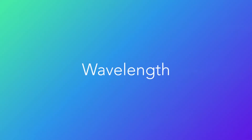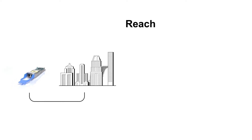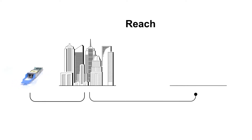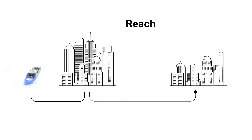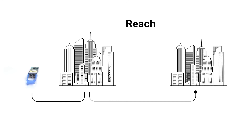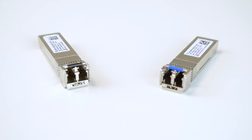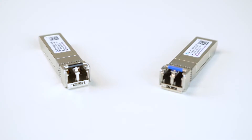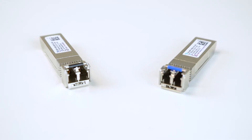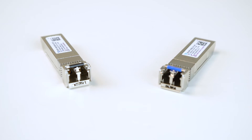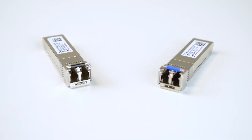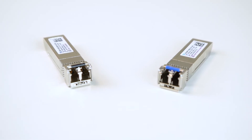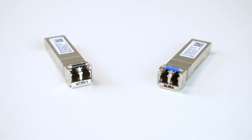Wavelengths are another important consideration point when choosing a transceiver. Since energy is lost over transmission distance, higher wavelength bands are used for long-range applications, while lower wavelength bands are used for shorter range. When it comes to transceivers, specifying which wavelength will be carrying your signal is crucial as both receiving and transmitting optics need to be on the same page.